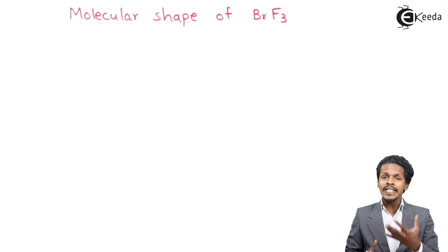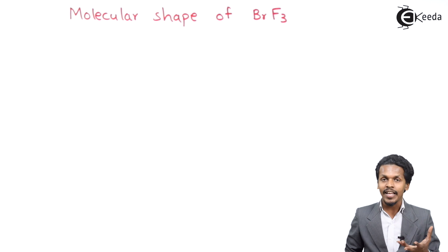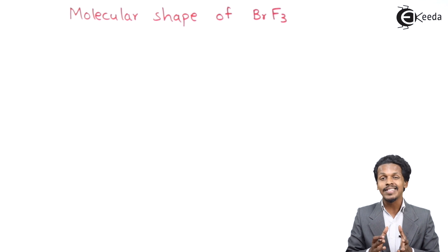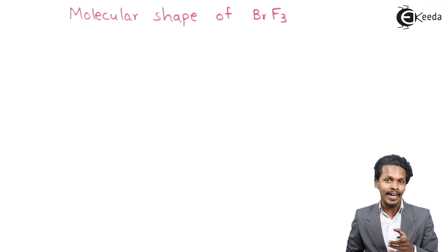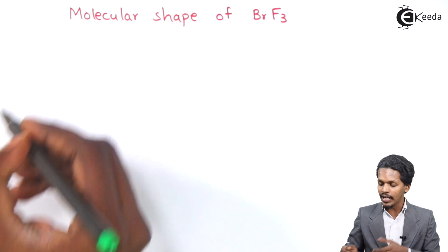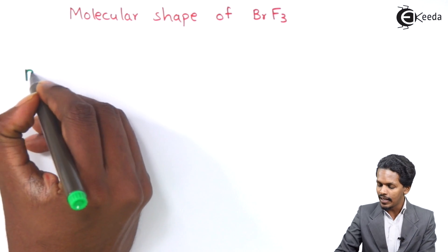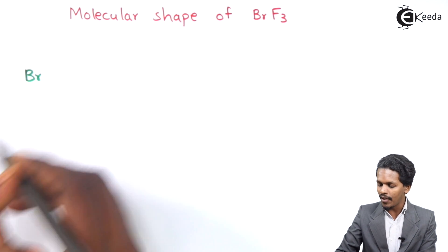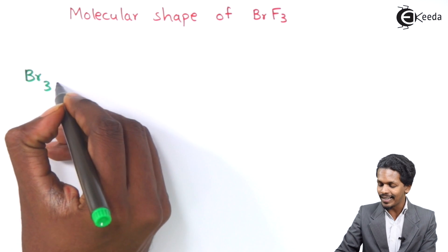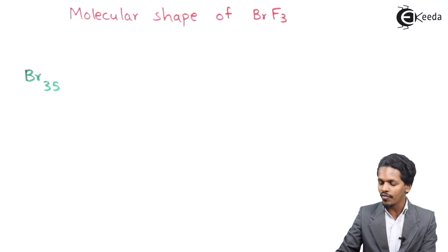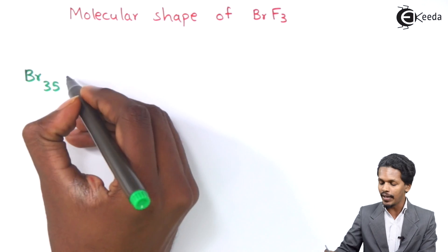So friends, before understanding the molecular shape of BRF3 we should understand the electronic configuration of the central atom. In BRF3, the central atom is bromine, and the atomic number of bromine is 35.